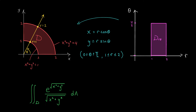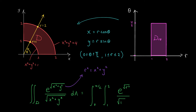Applying our change of variables formula, we integrate over this rectangular region in the r-theta plane: the integral from theta equals zero to pi over two, the integral from r equals one to two. We rewrite the integrand in terms of r's and thetas. In polar coordinates r squared is simply x squared plus y squared, so we can rewrite this as e to the square root of r squared divided by the square root of r squared, and we multiply by the absolute value of the Jacobian, the absolute value of partial xy over partial r-theta.